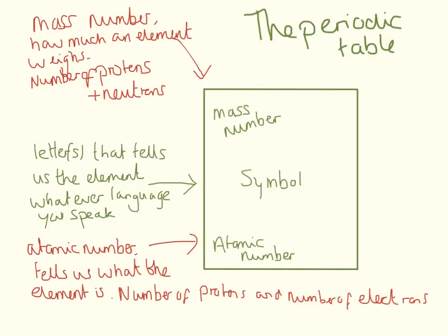The atomic number at the bottom is going to be the smaller of the two, and that tells us what the element is. The atomic number is unique to each element, and it is equal to the number of protons and also equal to the number of electrons. The symbol is the letter that tells us what the element is. The fantastic thing about the periodic table is that it's the same whatever country you're in and whatever language you speak — it's like chemistry's own special language.